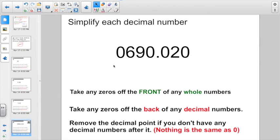One more like this. Here we have 690 and 20 thousandths. Take off any zeros off the front of any whole numbers. I'm not going to need that zero right there. Take off any zeros off the back of any decimal numbers. I'm not going to need that zero right there. I do need this zero, though. I don't want to delete him. He was in the middle of digits. And if I take away that zero, it's going to change the value of the number. 690 and 2 hundredths.